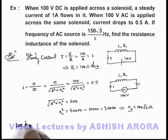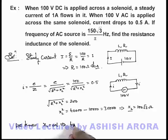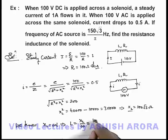And here we know the value of XL is ωL, so this will give us the value of L which is XL/ω. So we can write here 100√3 divided by, the value of ω is 2πf, this is 2π and the frequency here is 150√3/π.